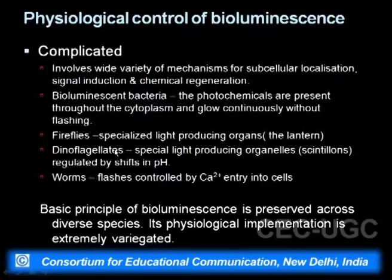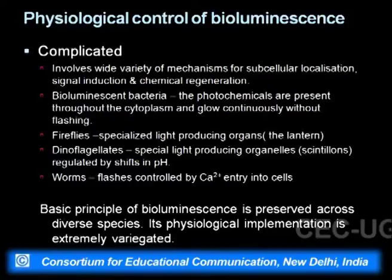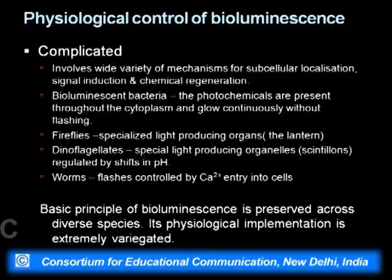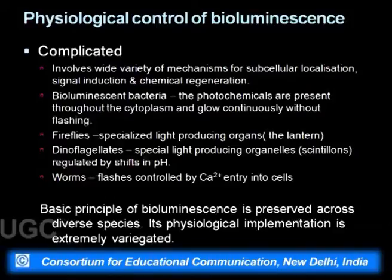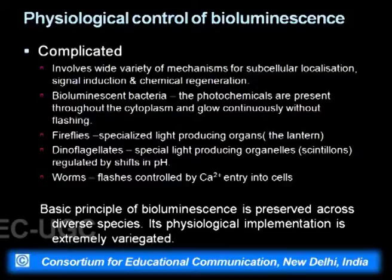Different organisms have entirely different bioluminescent mechanisms. Bacteria have photochemicals distributed throughout the cytoplasm and glow continuously without flashing, while fireflies show a very characteristic flashing. The mechanism of firefly flashing is interesting — the female recognizes the male by the duration of flashes, controlled by nitric oxide. Dinoflagellates have a localized light-producing organelle regulated by pH. In certain worms and coelenterates the luminescence is controlled by calcium depolarization. The basic principle is preserved but physiological implementations are extremely varied.